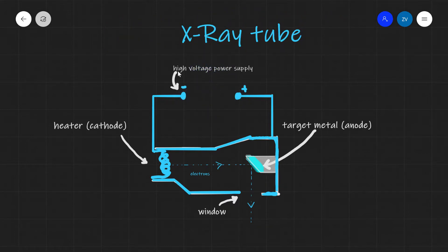The high voltage power supply is connected to a heater, which is also known as the cathode. Now this is made out of a metal which would normally release electrons. And as the metal releases electrons, they will be accelerated towards the positive end of the circuit, where you are going to find a target metal. This portion of the x-ray tube is also known as the anode.